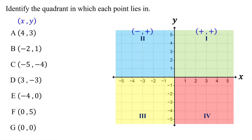In quadrant three, both the x and y-coordinates are negative. In quadrant four, the x-coordinate is positive and the y-coordinate is negative. So, to identify which quadrant a point lies in, you just need to focus on the signs of its coordinates.